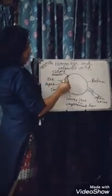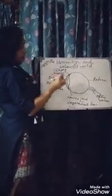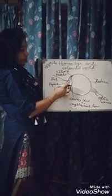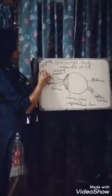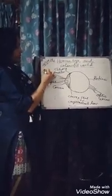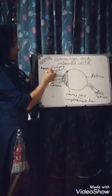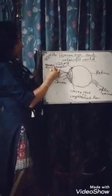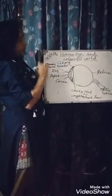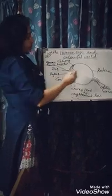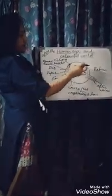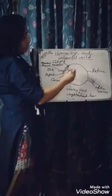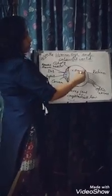There is a liquid substance which is filled between the cornea and the lens — that is called aqueous humor. Aqueous means water. And on the back side, between the lens and the retina, there is again a liquid — it is called vitreous humor.